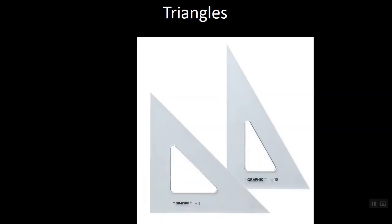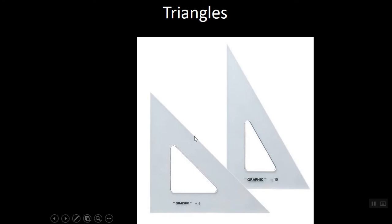Triangles are used for making vertical lines straight up and down at 90 degrees to the parallel bar. We have 45-45-90 and 30-60-90, and between the two triangles we can get 24 different angles. The scale is used to measure at full size, going to the nearest sixteenth of an inch. You also have an architect scale which allows you to draw big things on small pieces of paper.